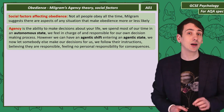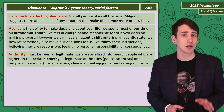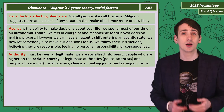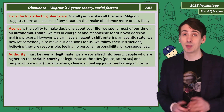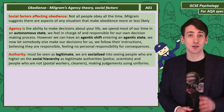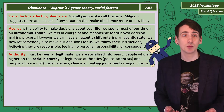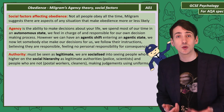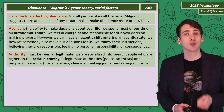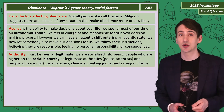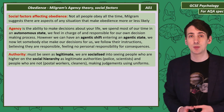Authority: we learn who is and who isn't a legitimate authority figure through socialisation. We are taught that police and scientists are higher on the social hierarchy than people like postal workers and cleaners. We will often make judgements on whether we should obey based on the uniforms that people wear.